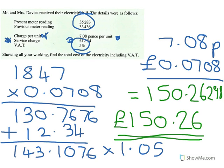Exactly the same process: do a subtraction of the meter readings, change the charge per unit into pounds, add the service charge, then multiply by 1.05 to get the VAT. Remember to round to two decimal places at the end.